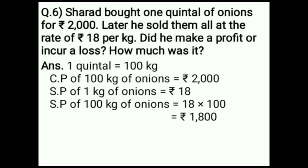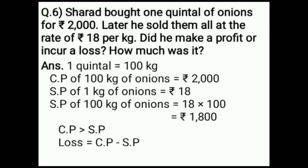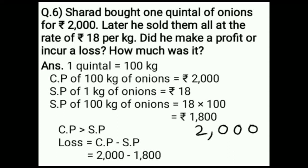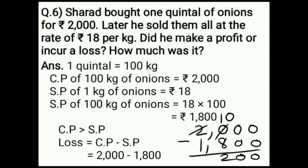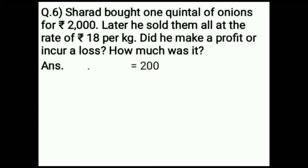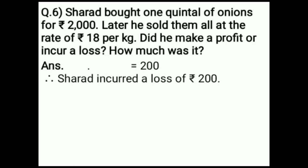Now compare whether cost price or selling price of 100 kg of onions is more. Cost price is greater than selling price, so you would find loss. The formula of loss is cost price minus selling price: Rs. 2,000 minus Rs. 1,800. After subtracting, 2,000 minus 1,800 equals 200. Therefore, Sharad incurred a loss of Rs. 200.